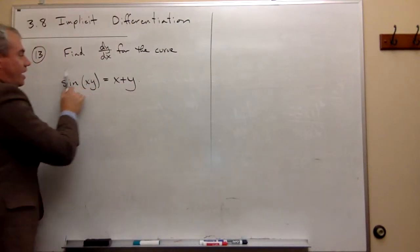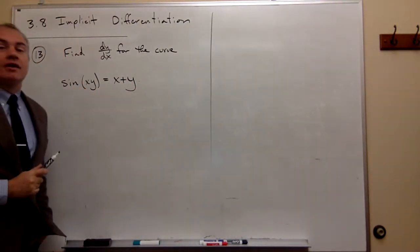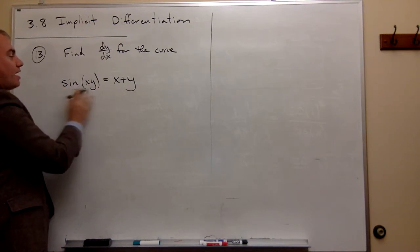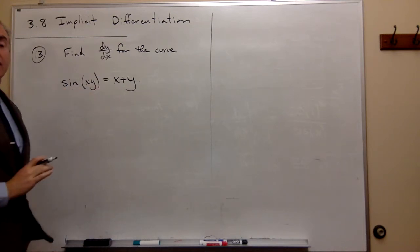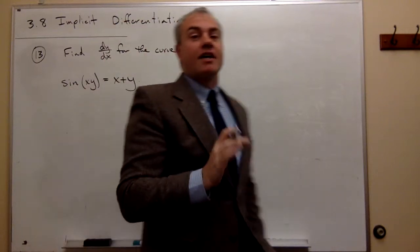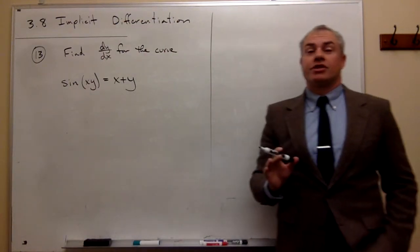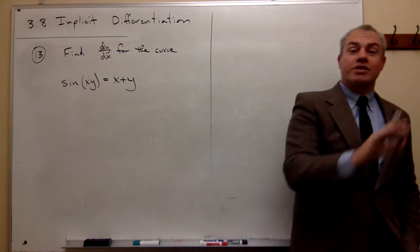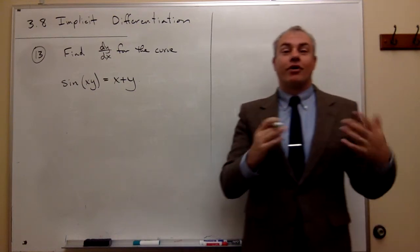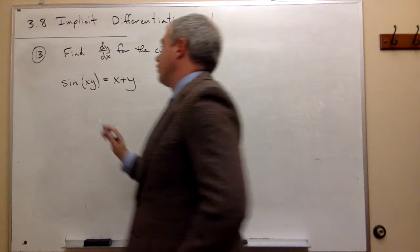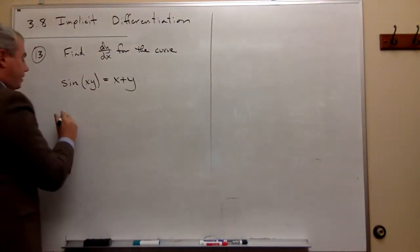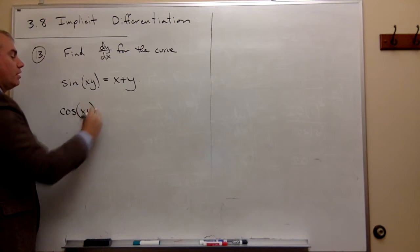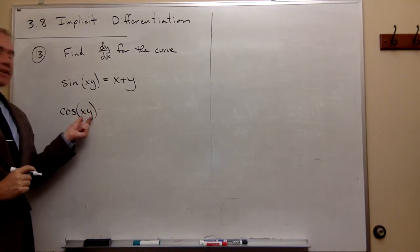This first guy can be a little bit tricky if you don't think about it carefully. We need to take the derivative of sine of something, and just like when we learned the chain rule, the derivative of sine of something is cosine of something times the derivative of the something. So the derivative of sine of something is cosine of that same thing times the derivative of xy.